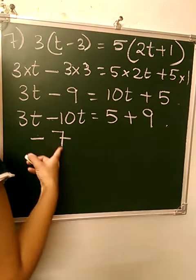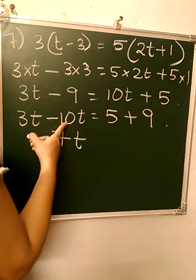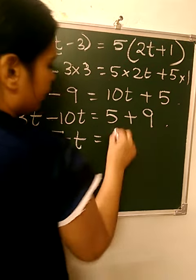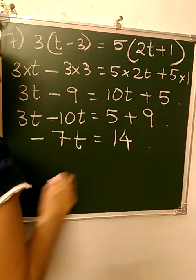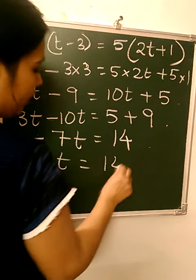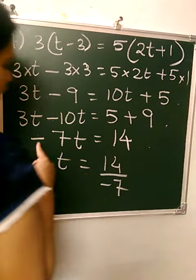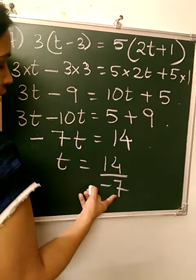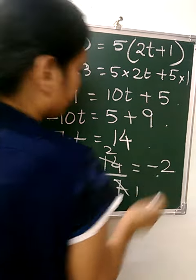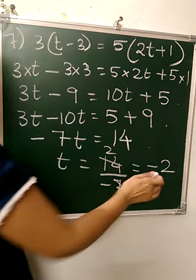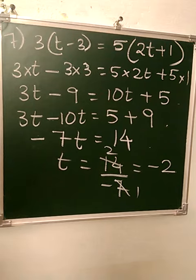10 minus 3 is 7, and the sign of the bigger number—10 is bigger, it is negative. Then this is 14. Now minus 7t will be transposed to that side, so t equals 14 divided by minus 7, which is minus 2. The value of t is minus 2. This completes question number 7.